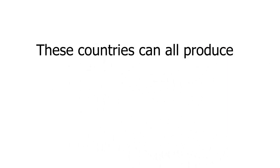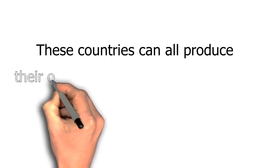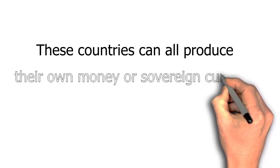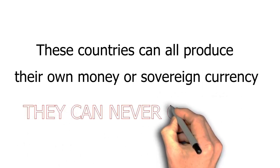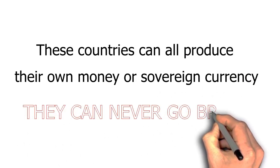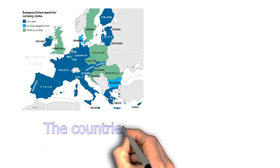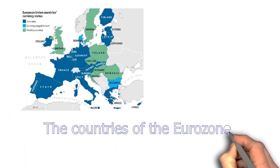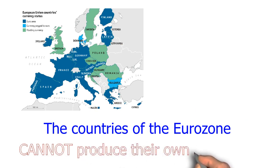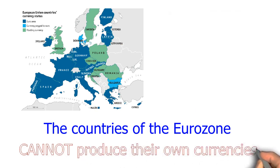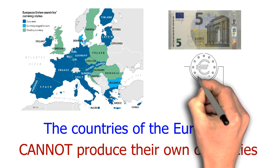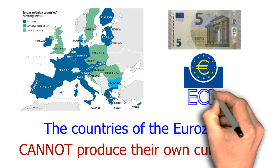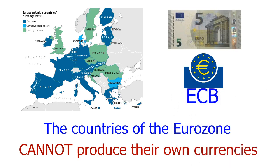What makes these countries so special is that they are able to produce their own money or currencies through their own central banks and, most importantly, they can never go broke. This is very different from the countries of the Eurozone that cannot produce their own currencies. Eurozone countries use the one currency, the Euro, produced by the European Central Bank, or ECB.